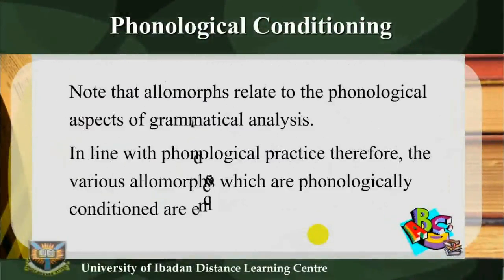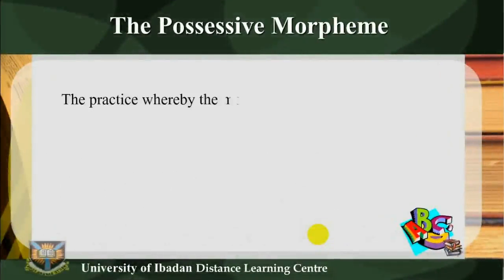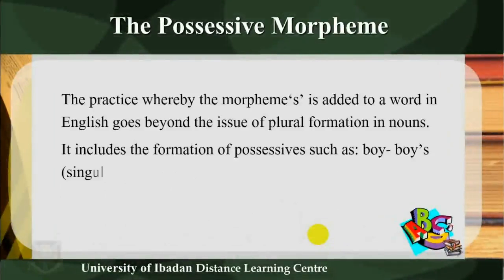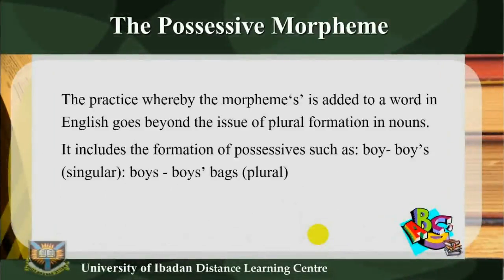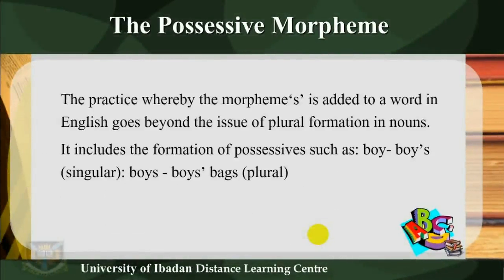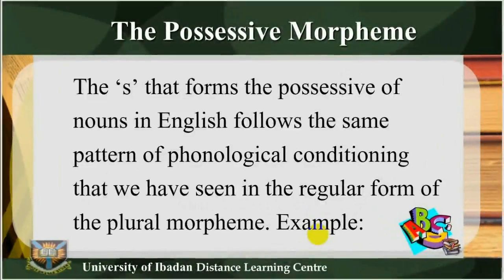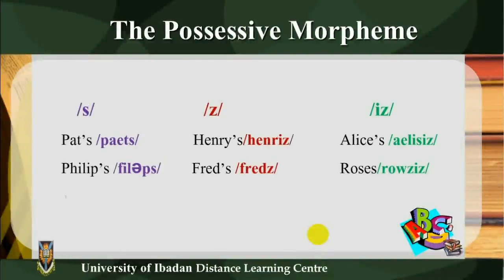Note that allomorphs relate to the phonological aspects of grammatical analysis. In line with phonological practice, the various allomorphs which are phonologically conditioned are enclosed in slanting lines. The practice whereby the morpheme S is added to a word in English goes beyond plural formation in nouns. It includes the formation of possessives such as boy's (singular), boys' (plural). Examples: S — Philip's; Z — Henry's, Fred's; IZ — Alice's, Rose's.